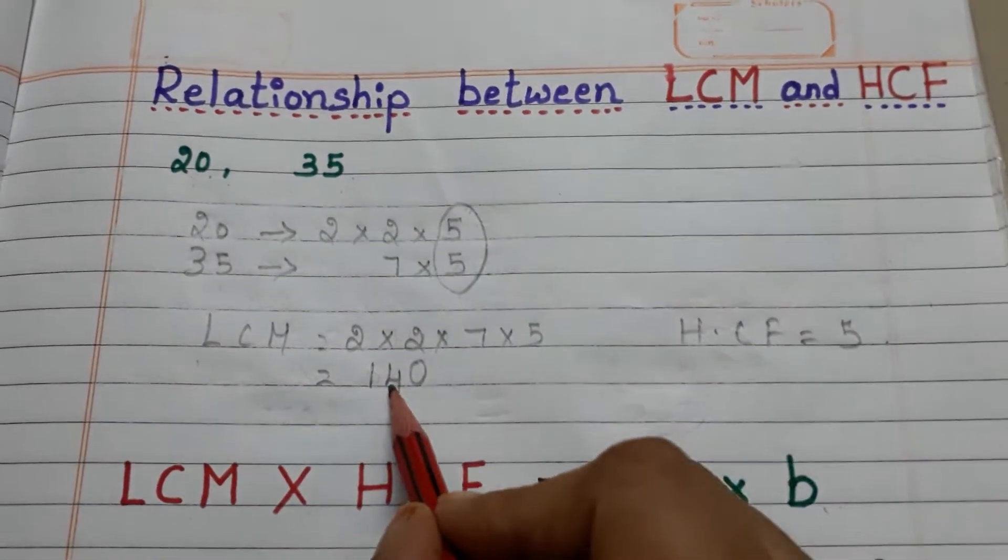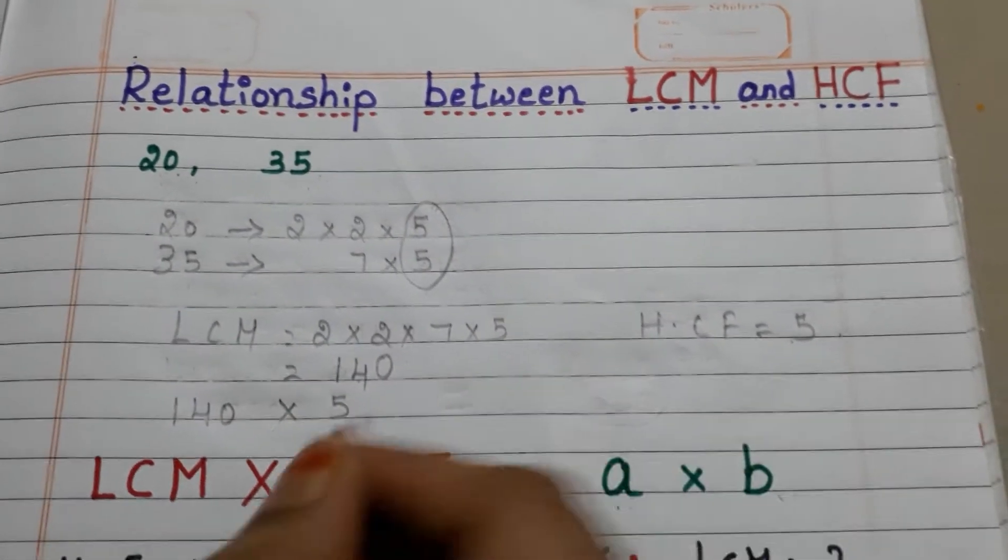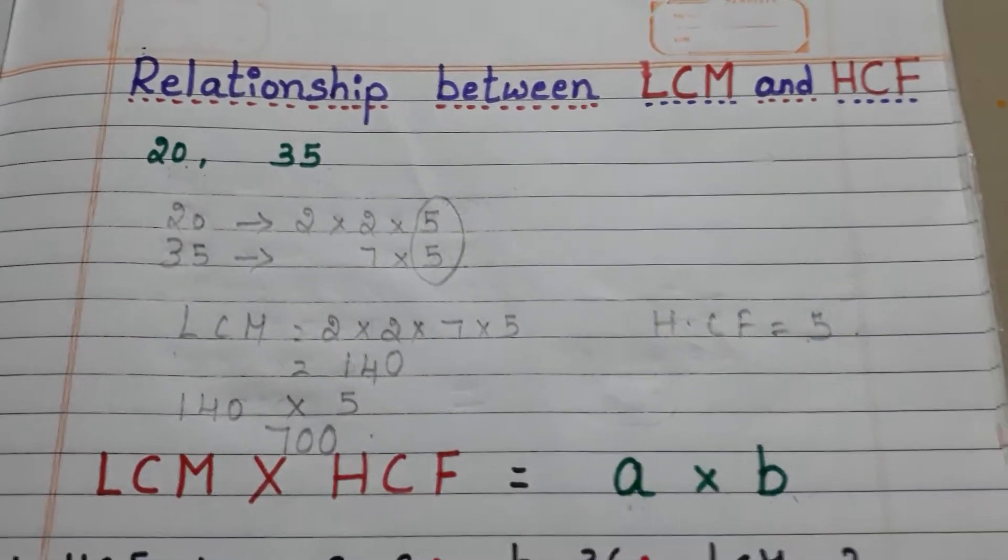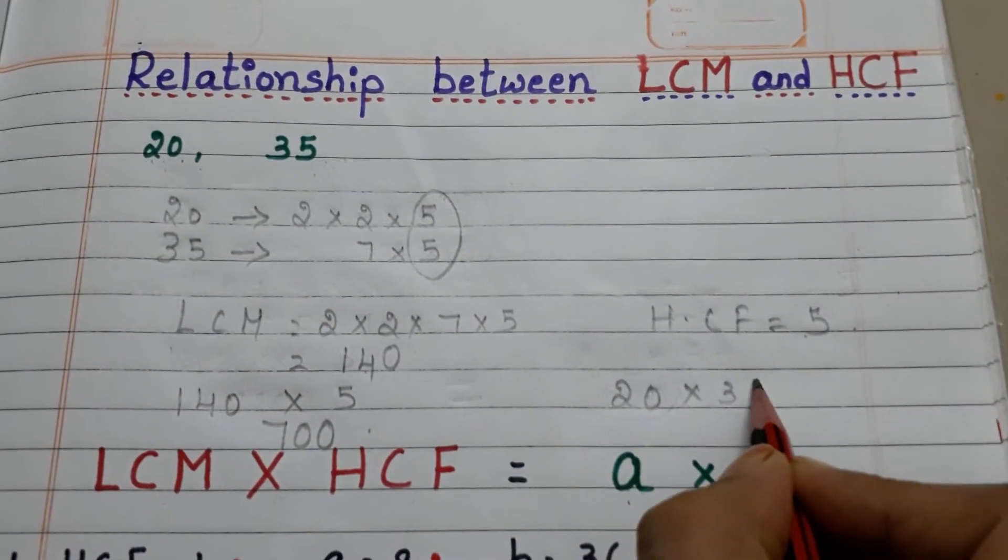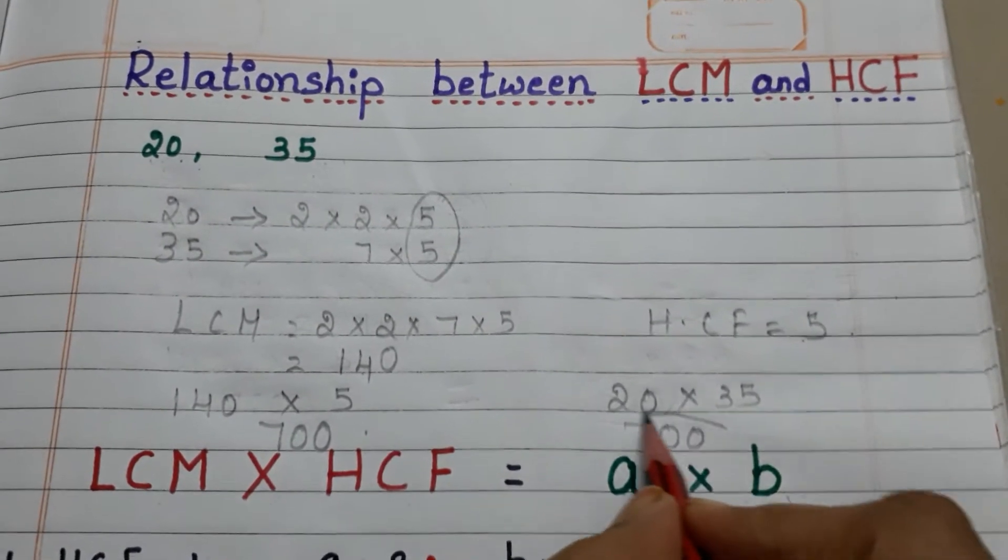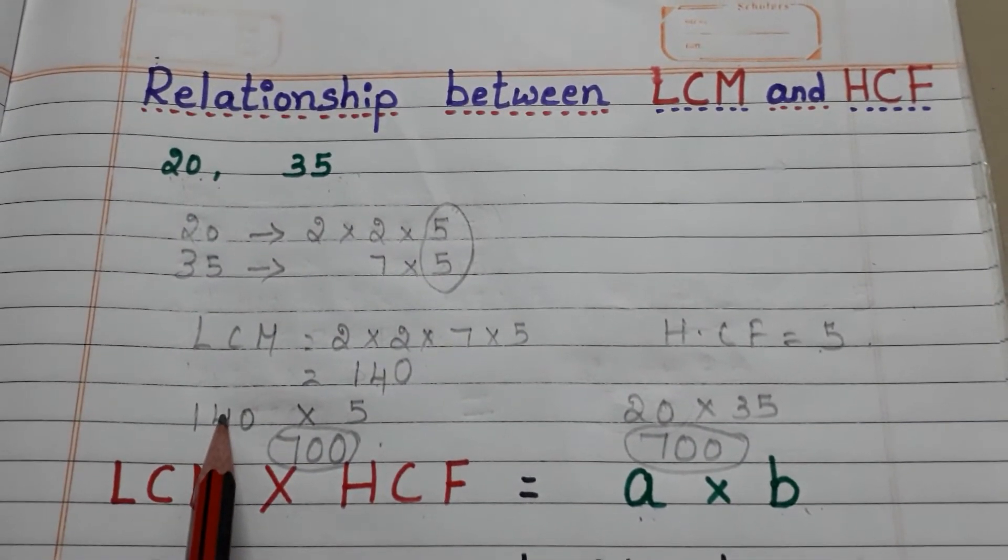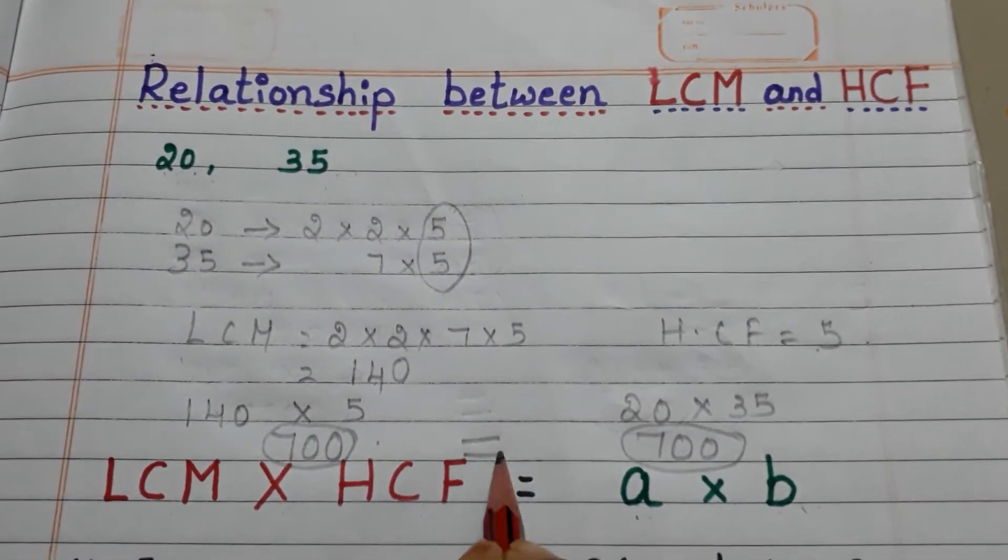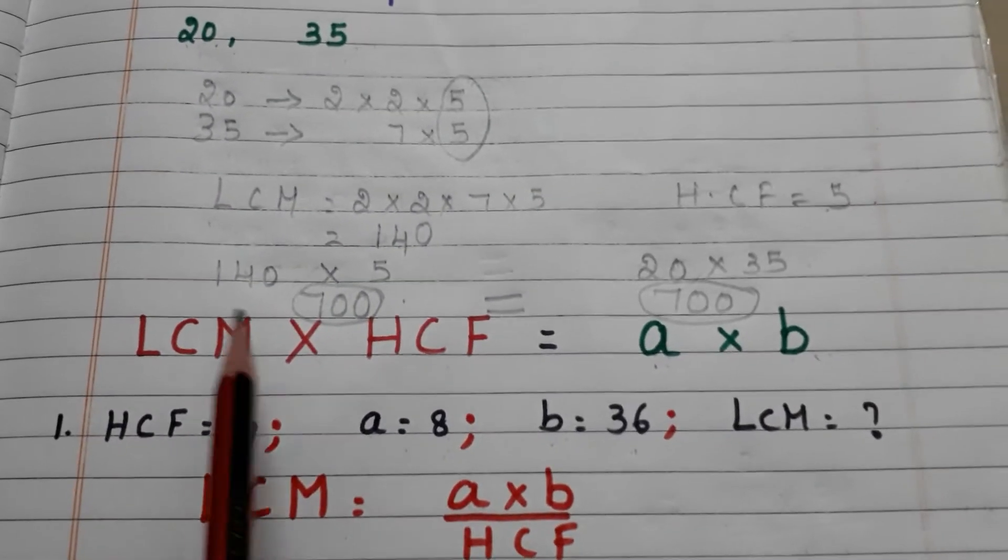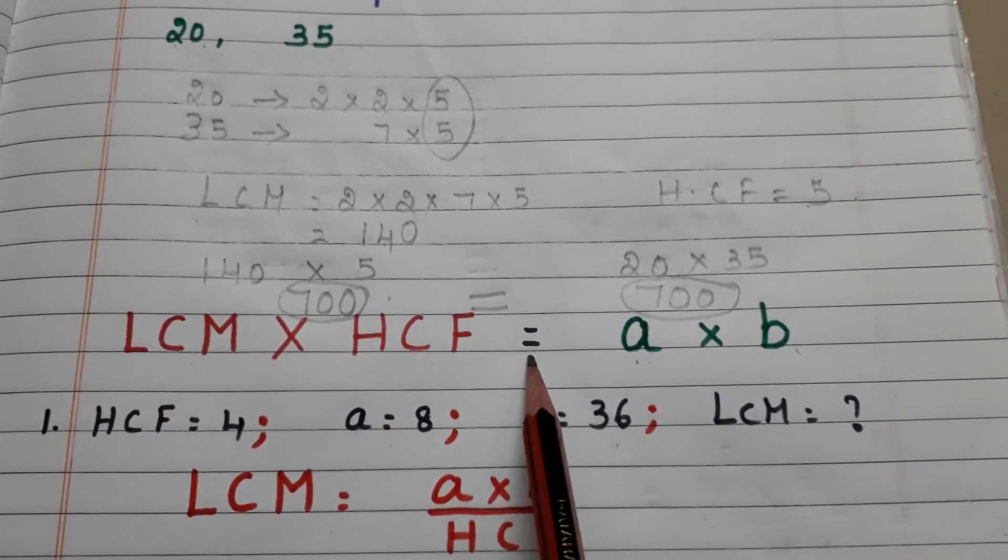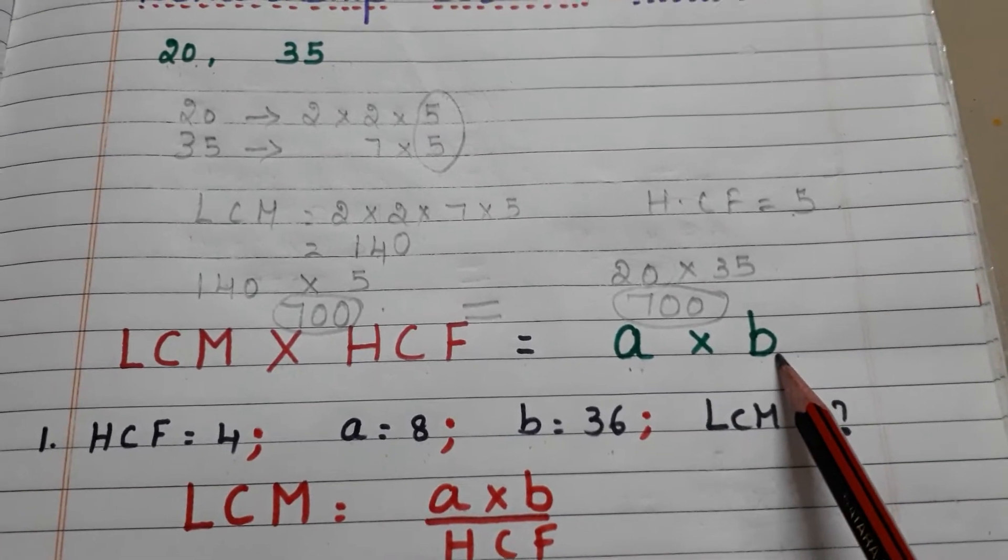Now we take the product of LCM and HCF. 140 into 5. How much? 700. Now we take the product of given two numbers. 20 into 35. How much? 700. See, here we got equal answers. Means product of LCM and HCF is equal to product of given two numbers. So the formula is LCM into HCF equals a into b. Here a means first number and b is second number.